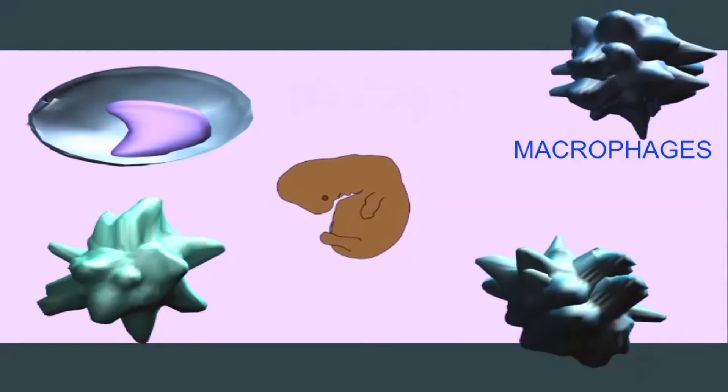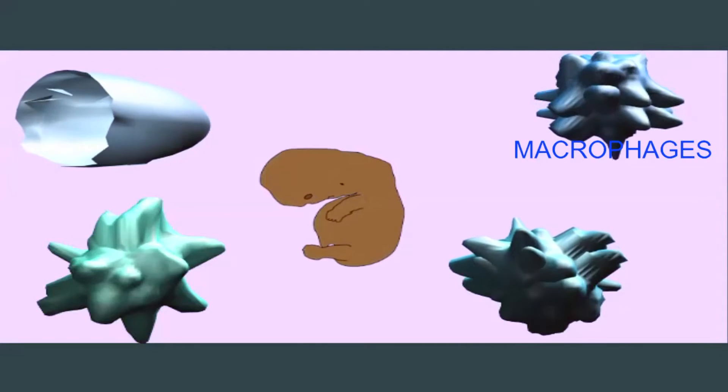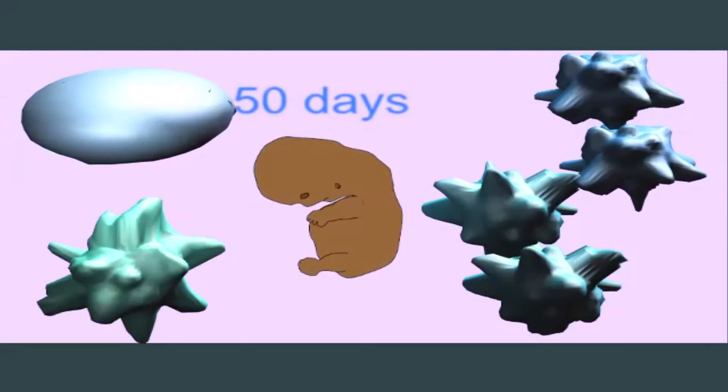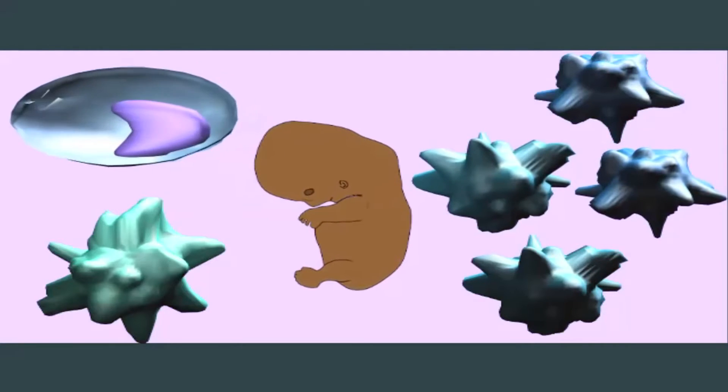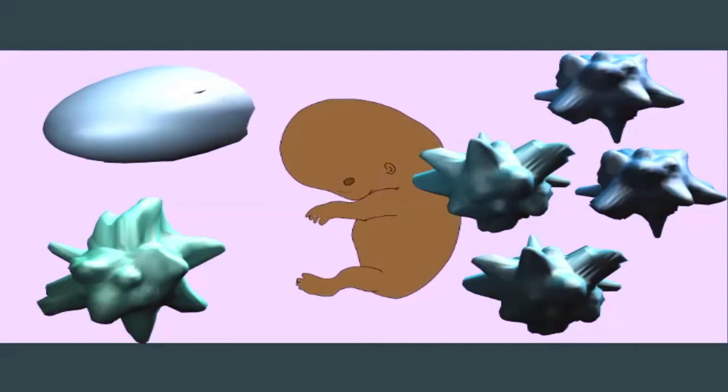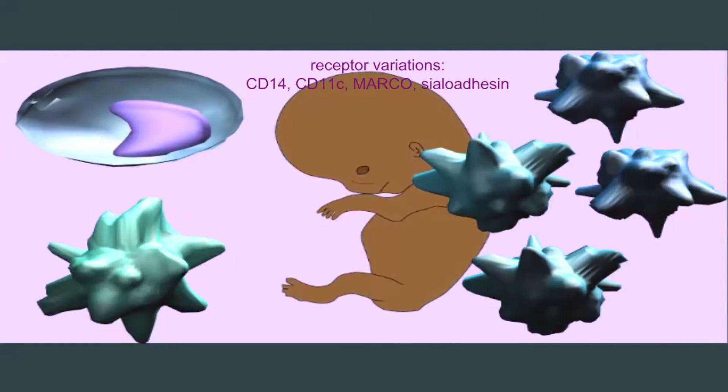Some of these cells are capable of dividing and therefore they can regenerate and provide new macrophages, while some lineages of macrophages cannot regenerate and thus must be supplied by monocytes from the blood. Different types of macrophages express different receptors.